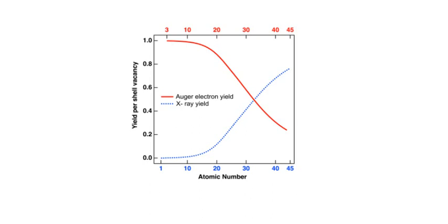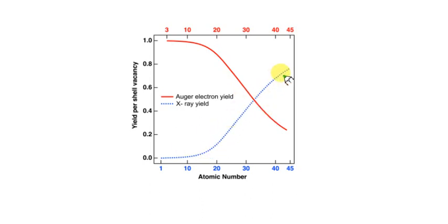When recording Auger spectra, the metal must be chosen carefully because the Auger yield per shell vacancy decreases as we move to higher atomic numbers. As you can see, as atomic number increases, Auger yield decreases while X-ray yield increases. So the particular metal must be chosen carefully.